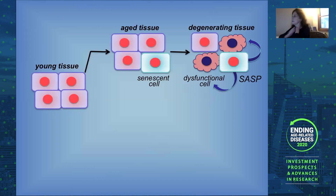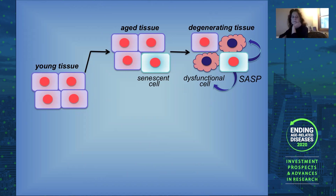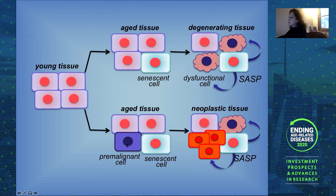Here is the model: at young ages there are very few senescent cells, and with age, senescent cells accumulate — though they are never a majority of cells within a tissue. These cells are secreting molecules that can act on neighboring cells, causing them to fail to function properly, which could drive some of the degenerative diseases associated with aging. We are all accumulating premalignant cells with age due to mutations, and we believe senescent cells can change the tissue environment such that these premalignant cells can be stimulated to go on to form neoplastic phenotypes associated with aging.